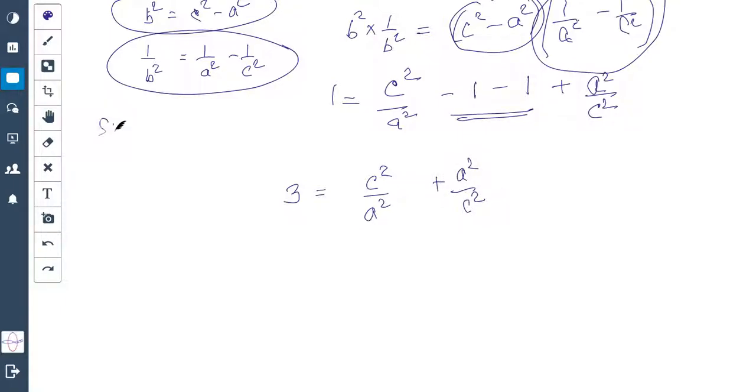Now remember sine θ is A/C, that's what we found. Suppose we give this ratio a name, suppose this is T. So 3 equals... this is 1/T² plus T².